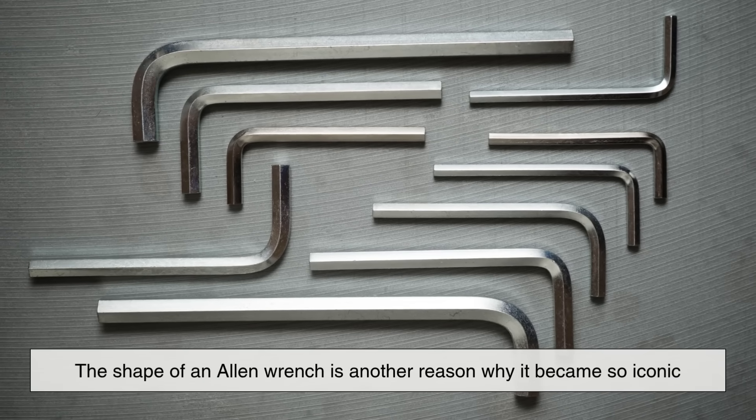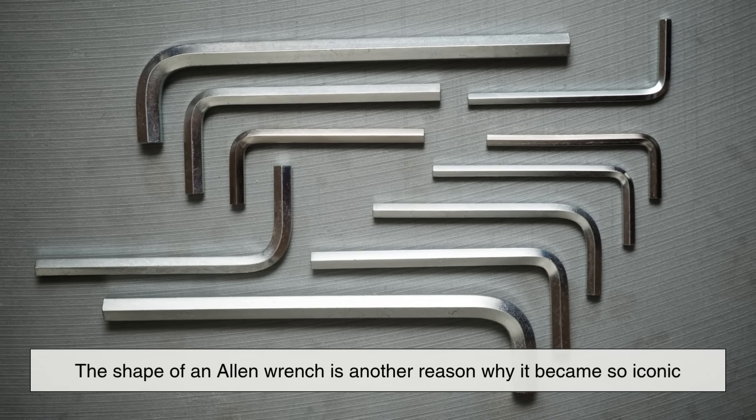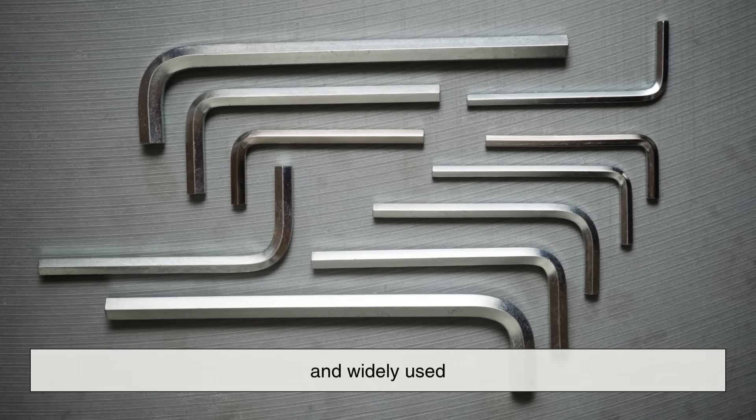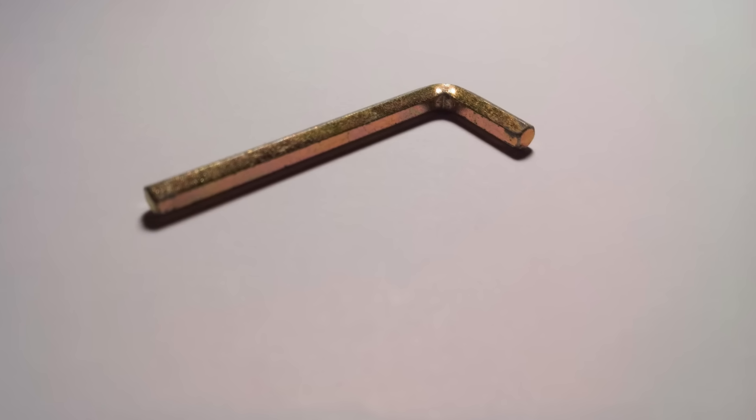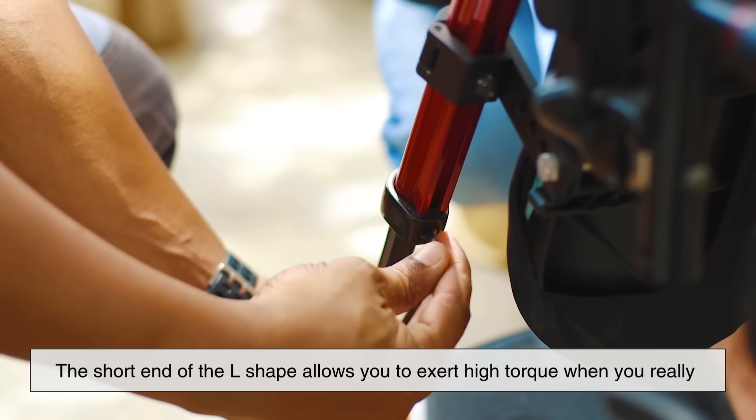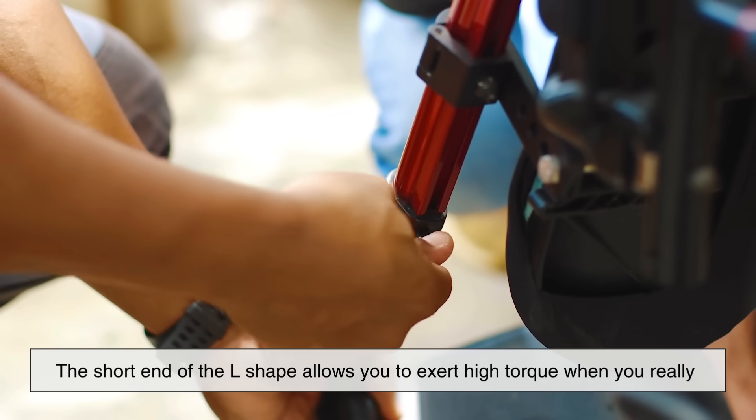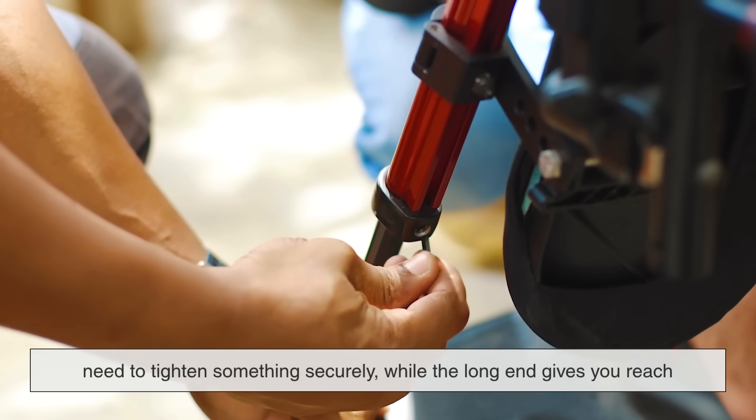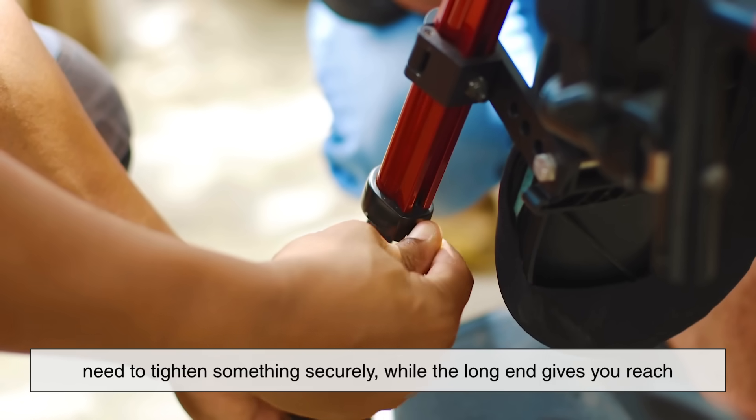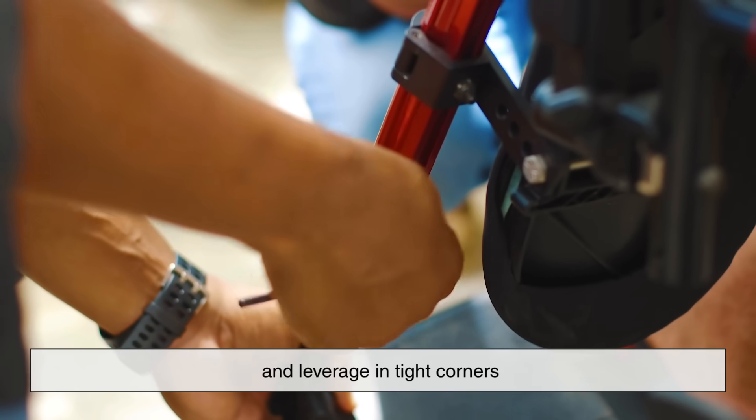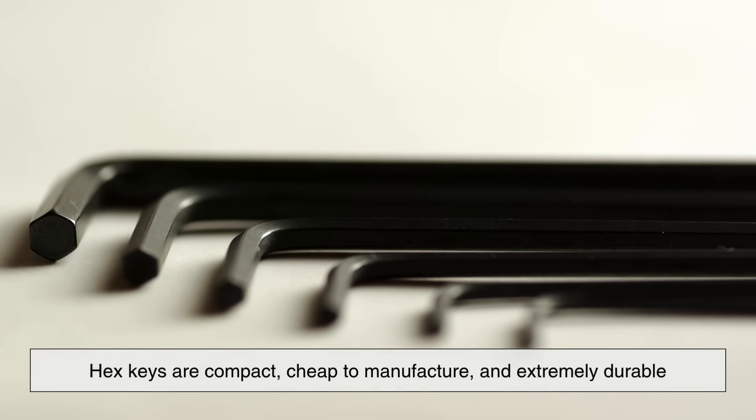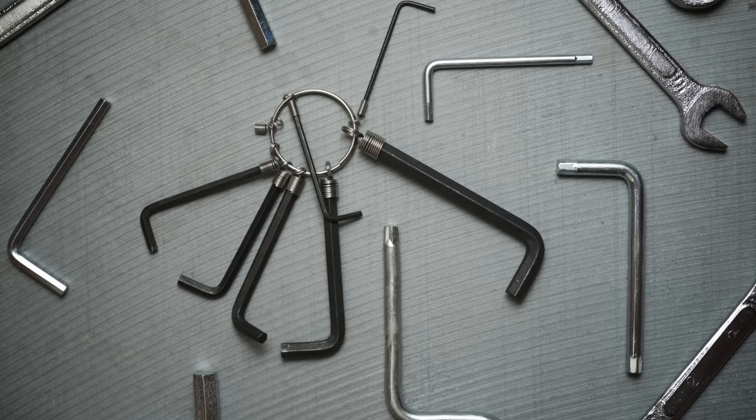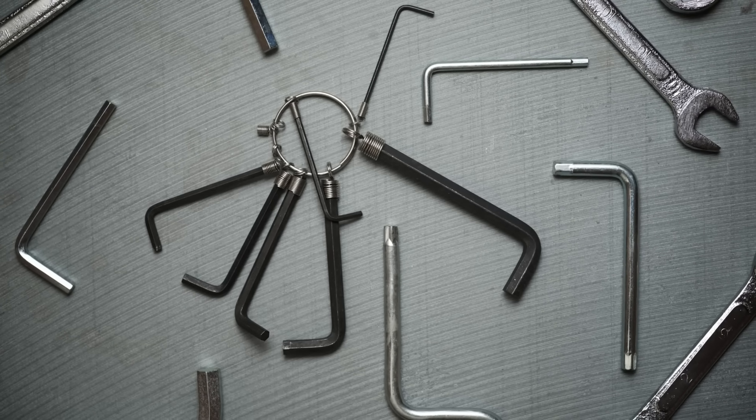The shape of an Allen wrench is another reason why it became so iconic and widely used. The L-shaped design isn't just random, it's incredibly practical. The short end of the L-shape allows you to exert high torque when you really need to tighten something securely, while the long end gives you reach and leverage in tight corners. Plus, hex keys are compact, cheap to manufacture, and extremely durable. They don't require fancy materials or complex machining.